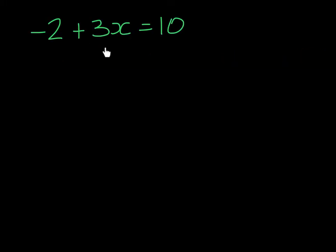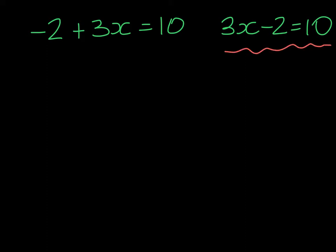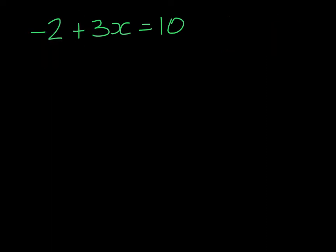This is our first equation and we see that the x term has been written second and that take away two has been placed first. This is actually an equation from the first two-step video, and we addressed the inverse operations — take away two first and then the three times. Now I would resist the urge to rewrite the equation. Students always say they like to see it with the x first, but what happens is we lose the negative on two when we copy this incorrectly. The two is often associated with the plus from the 3x, but the actual sign on two is negative. When we recopy them, these kinds of mistakes occur. It's best to leave the equation the way it is and perform the inverse operations.